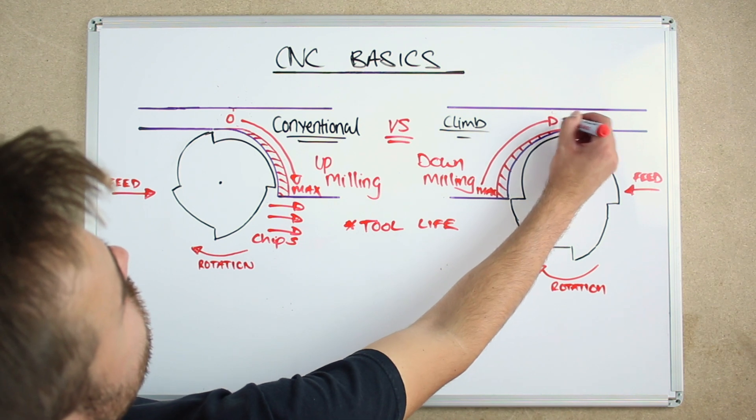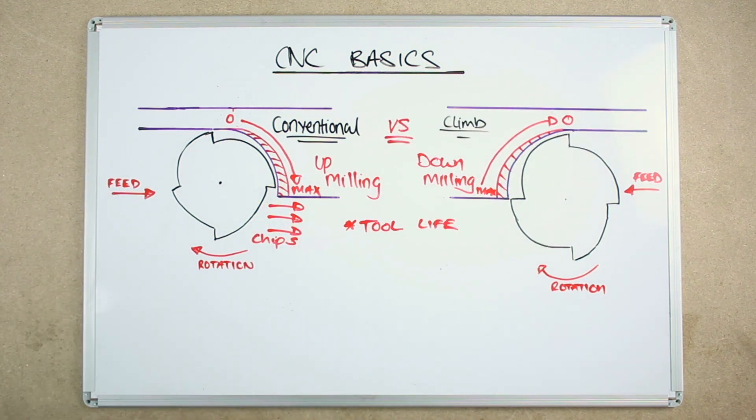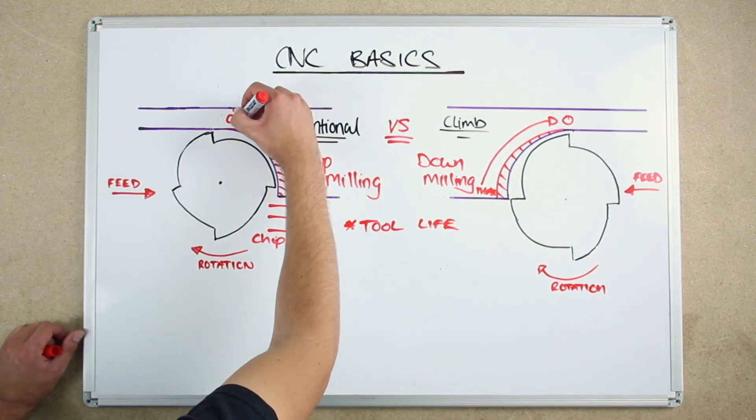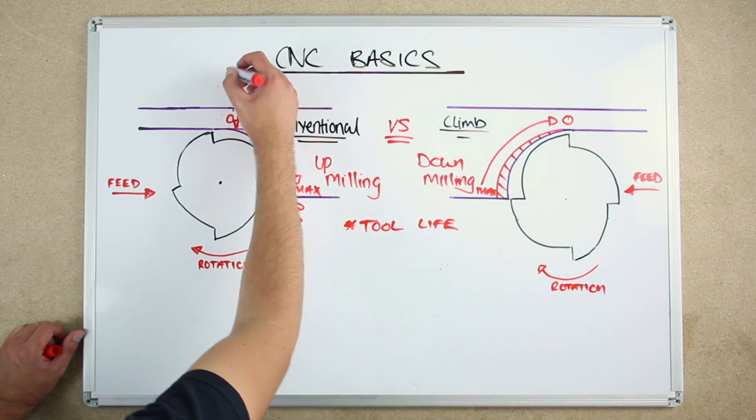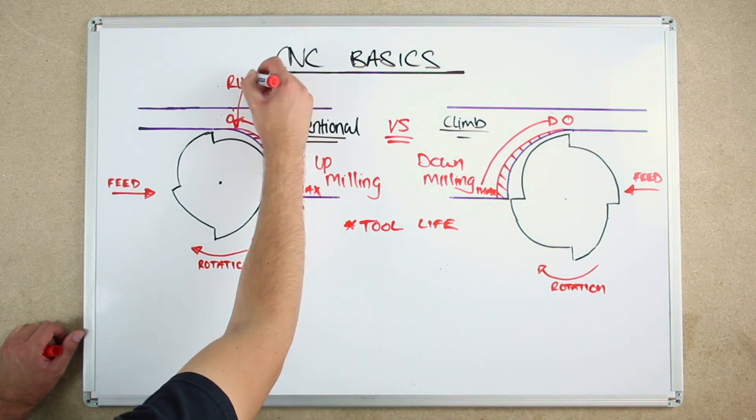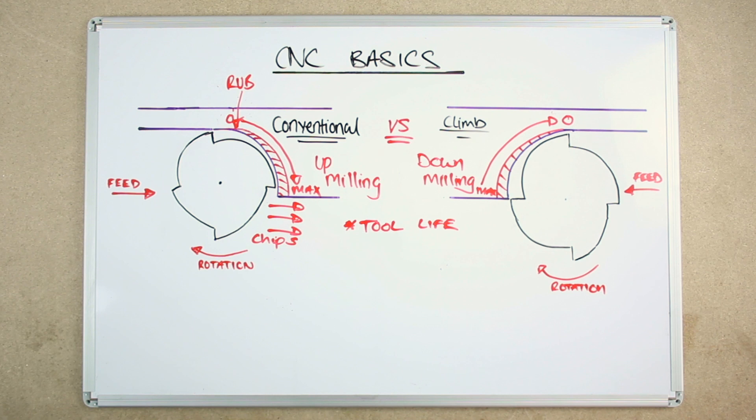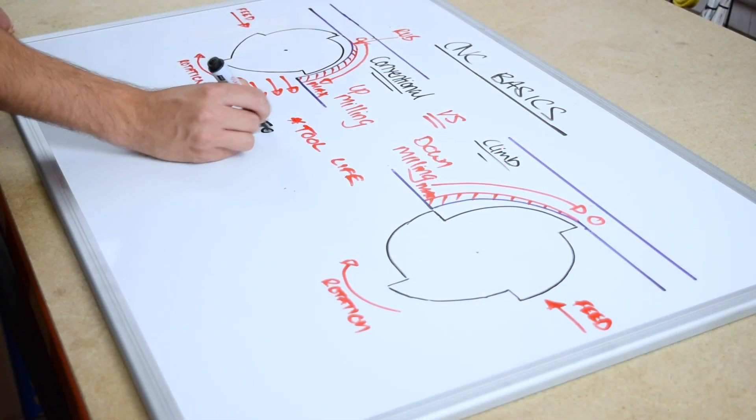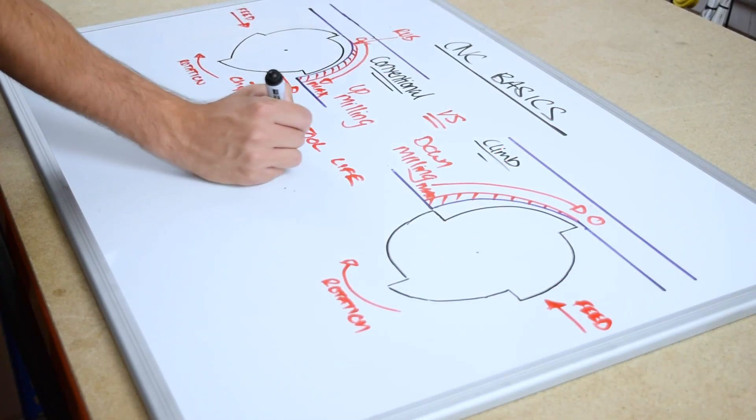In conventional milling, at the point where the end mill starts each chip, it will rub rather than cut, until enough pressure has built up for it to engage and begin the chip, again reducing tool life. Conventional milling can reduce the tool life up to 50%.